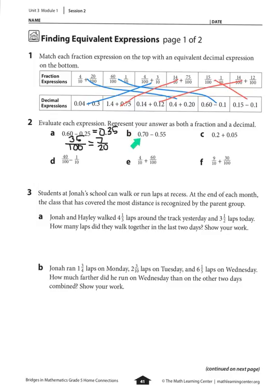Part b: 70 hundredths minus 55 hundredths. 70 minus 55 equals 15, so it equals 15 hundredths. Written as a fraction that's 15 over 100, and simplified that equals 3 twentieths.